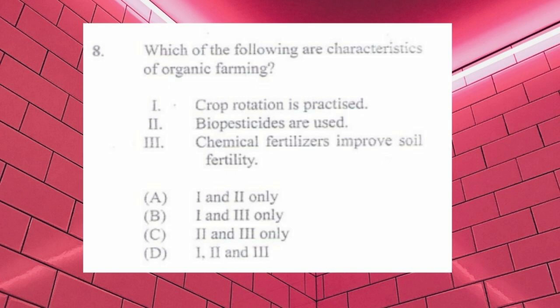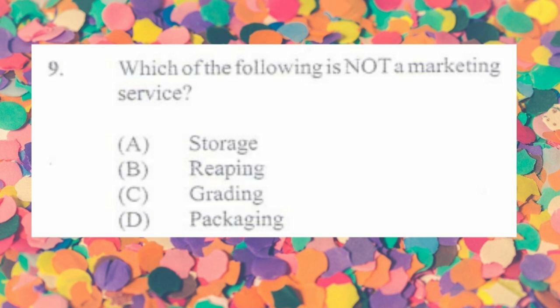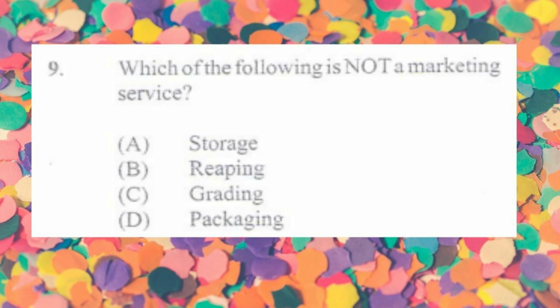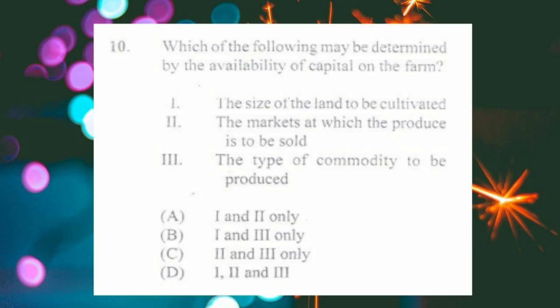Question number nine: which of the following is not a marketing service? a) storage, b) reaping, c) grading, d) packaging. The answer is b) reaping. Grading is when produce of the same size are grouped together, making them look more uniform and presentable to the consumer — for example, eggs of the same size in a tray.